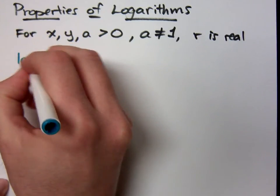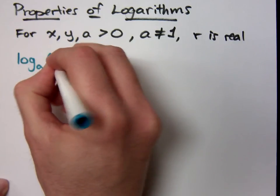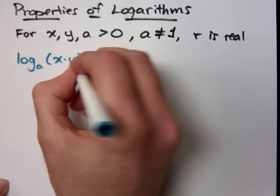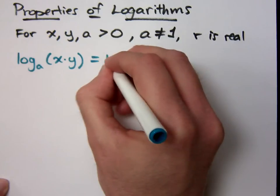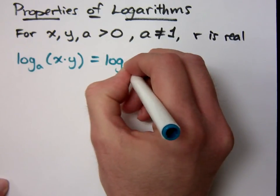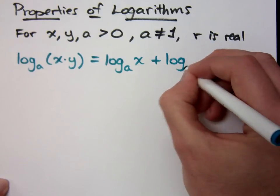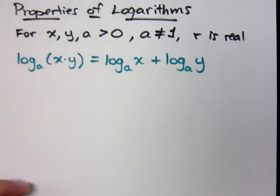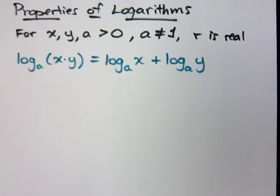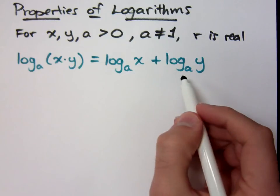If I have log with a base a and inside I have the product x times y, you can rewrite this as log with base a of x plus log with base a of y. Think about the connection with exponents: when you multiply and you have the same base, what do you do with those exponents? You add them — similarly to what we have here.